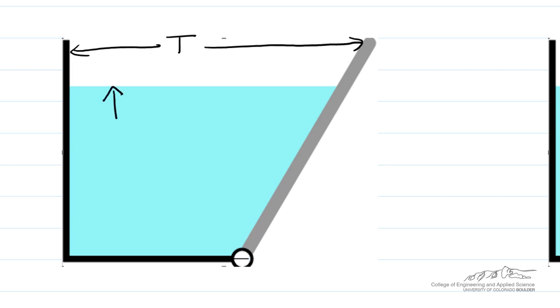Some notation: h will be the height of the water, theta will be the angle relative to the horizontal. The first thing that we want to keep in mind is that pressure is only a function of the water height, not a function of the angle of the gate.